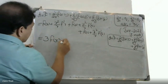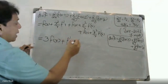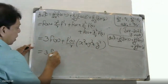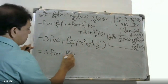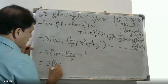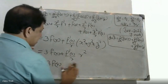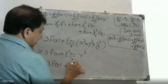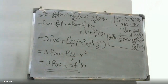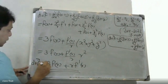Collecting terms, we get 3f(r) plus f'(r)/r times (x squared plus y squared plus z squared), which equals 3f(r) plus f'(r)/r times r squared, giving the final result: 3f(r) plus r·f'(r).